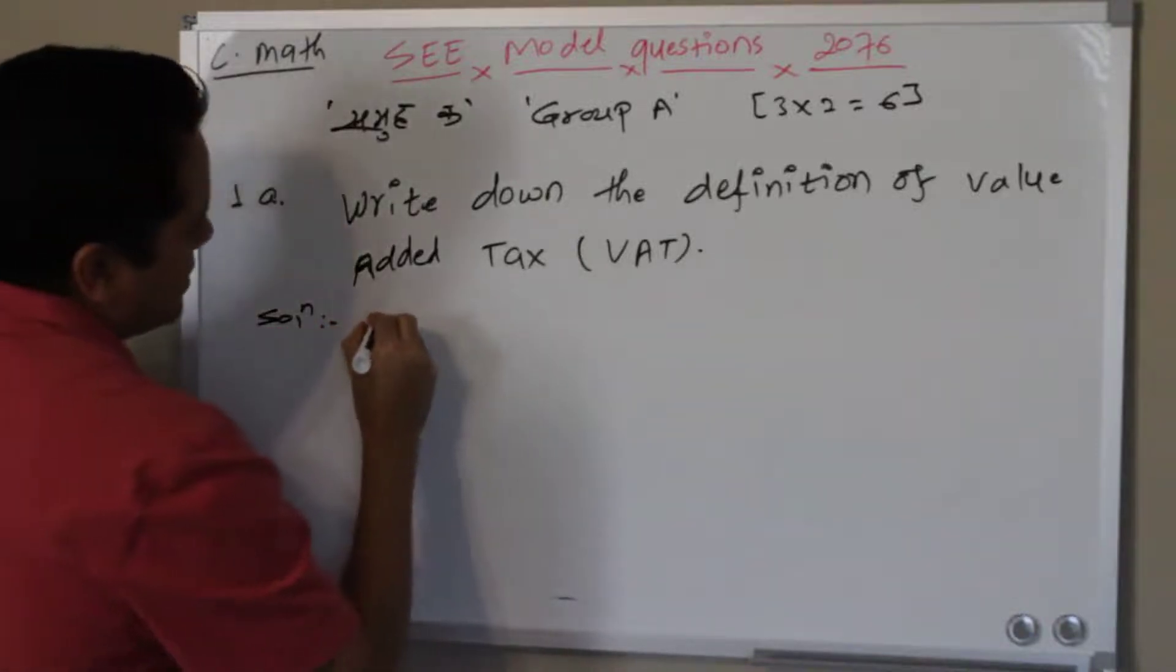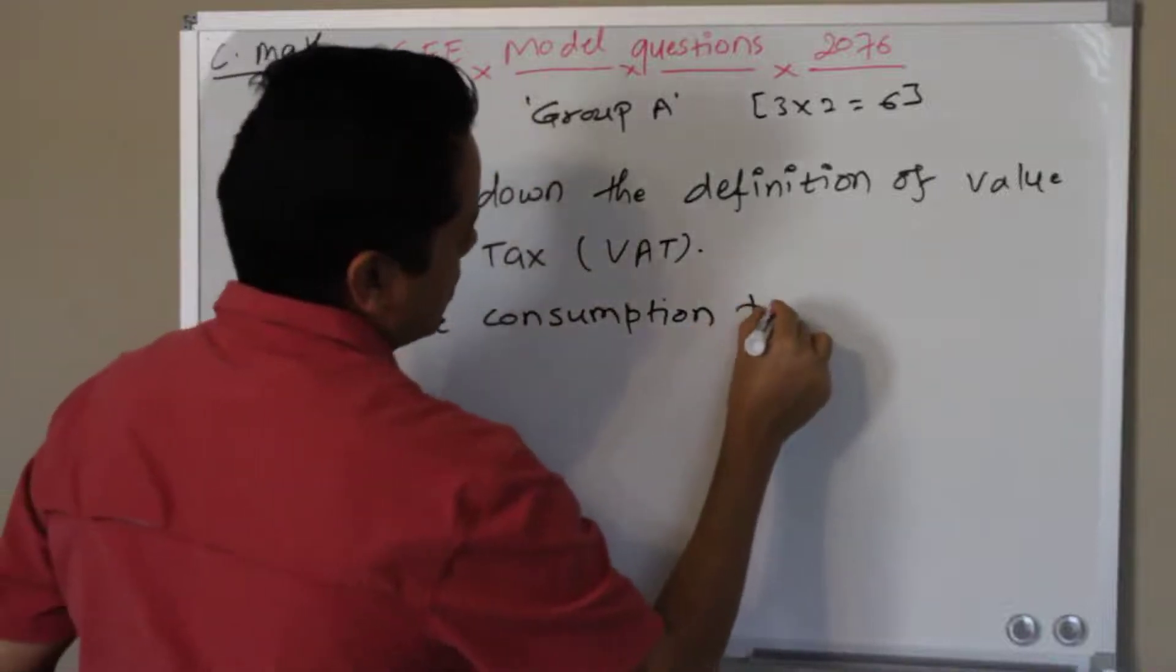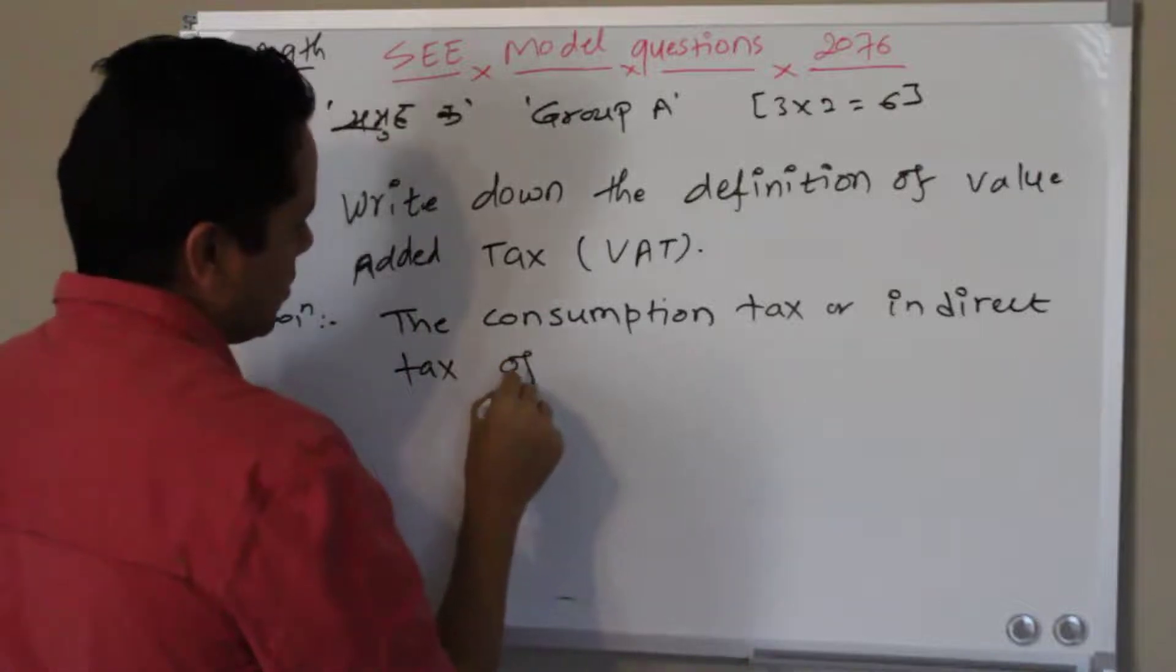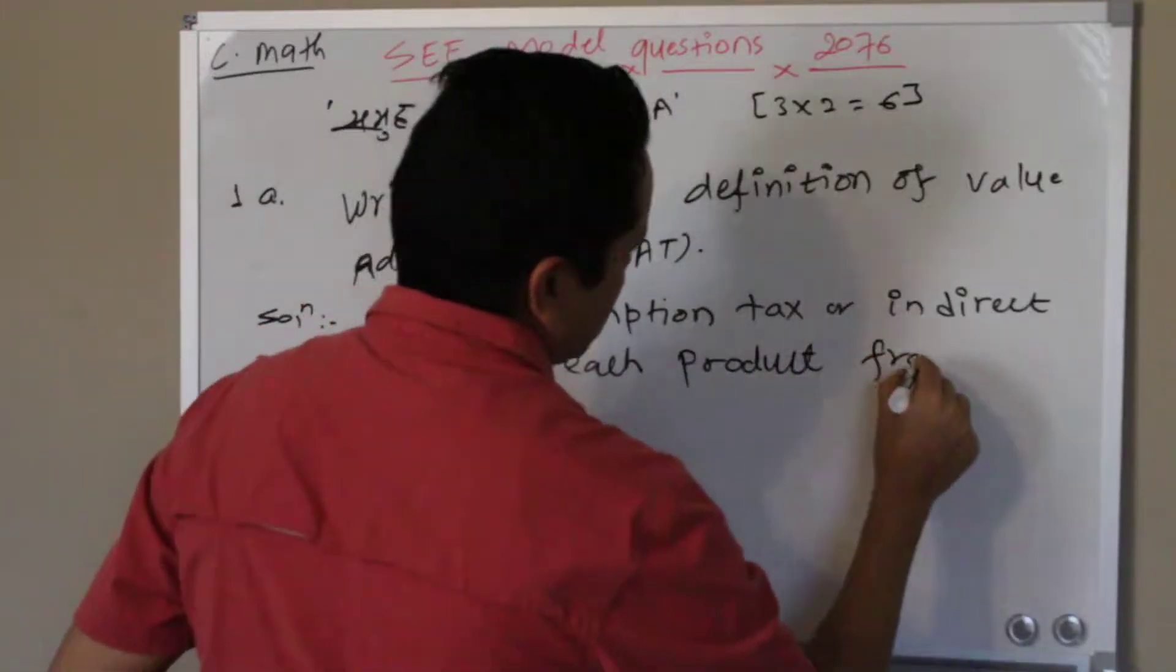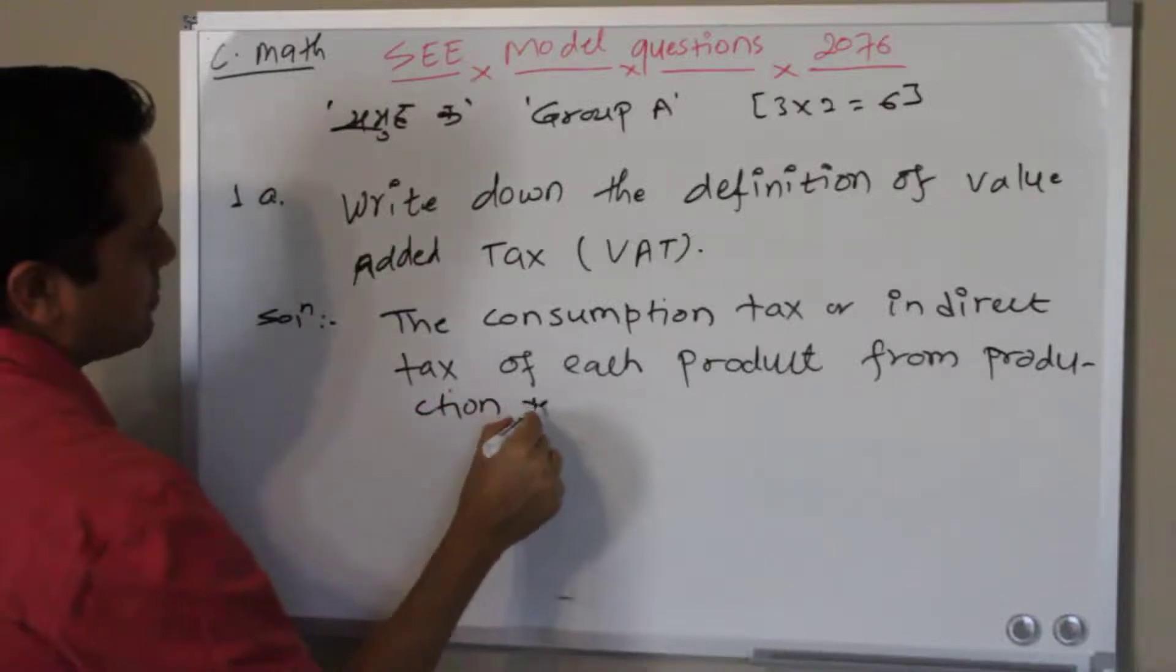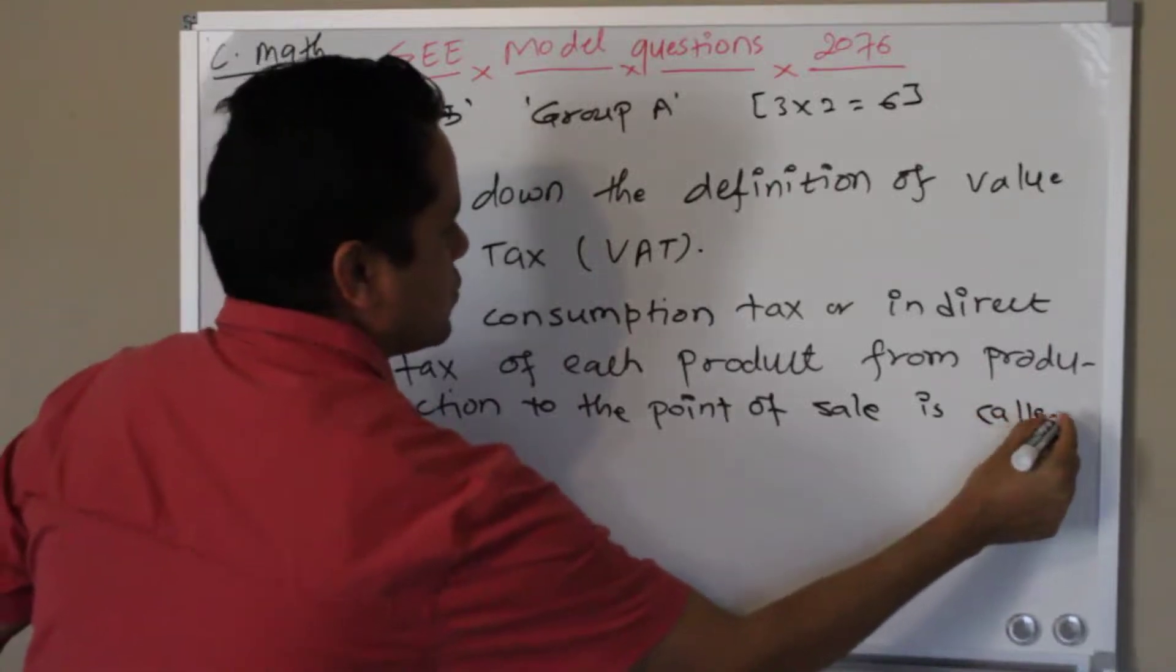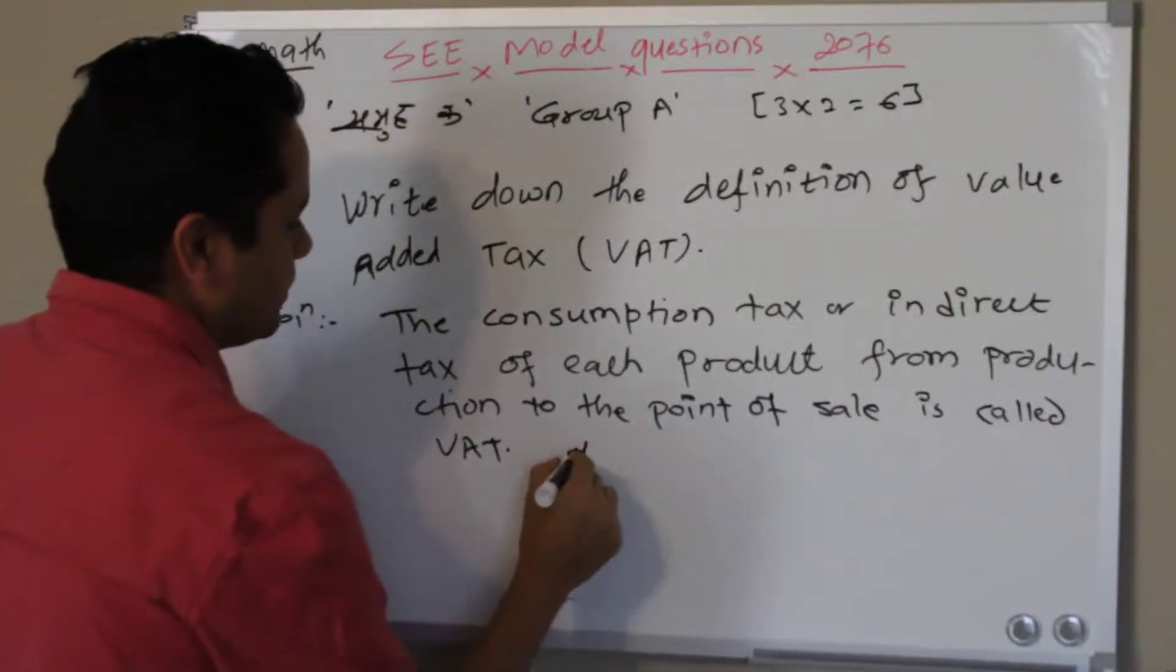The consumption tax or indirect tax of each product from production, from production to the point of sale, is called VAT or value-added tax. Okay, value-added tax. This is the answer you can write down in your own definition.